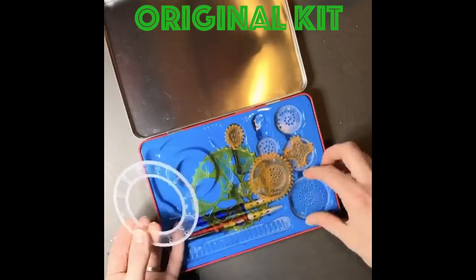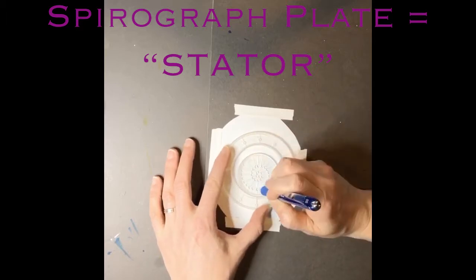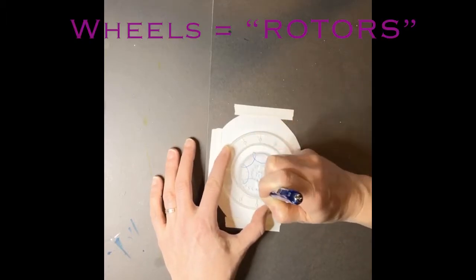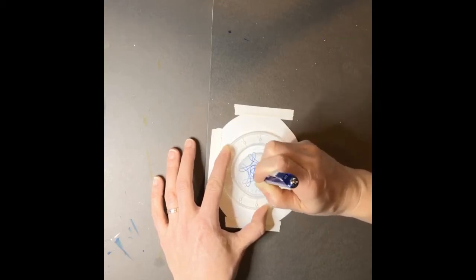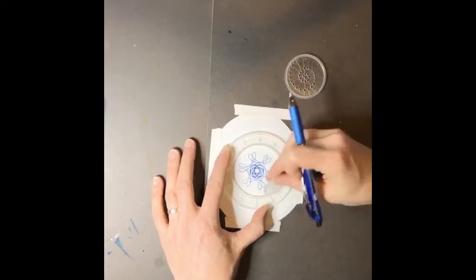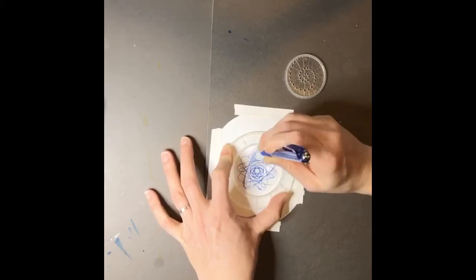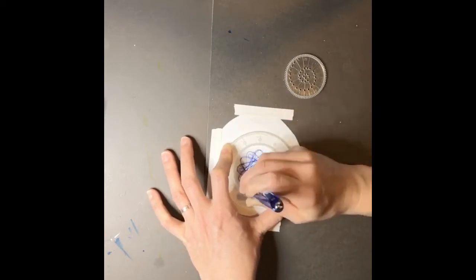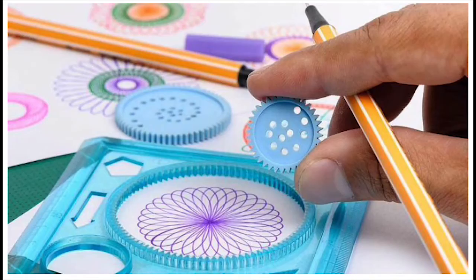The original spirograph set comes with a bunch of plastic discs and wheels that have cogs or teeth on the outside edge and they interlock. So when you spin the wheel around the inner part of the circle, it creates a pattern or a design depending on the placement of your pen in one of many holes that are on the plastic circle.